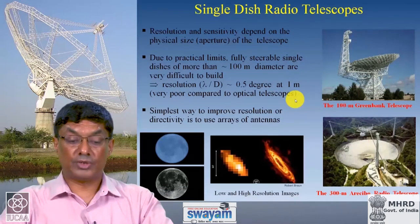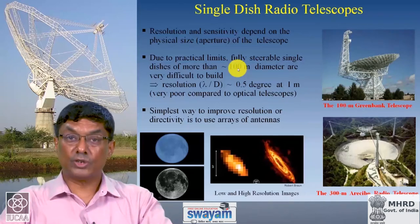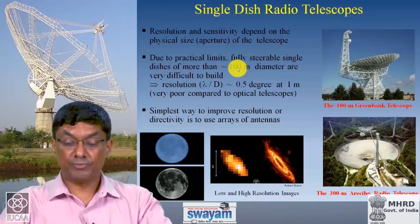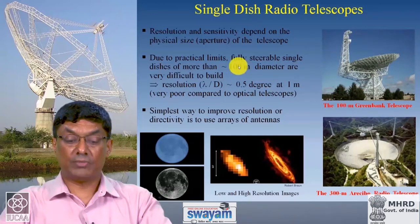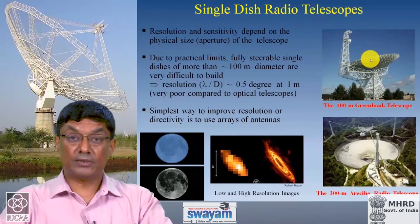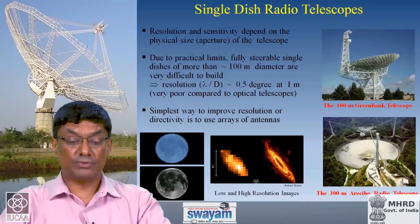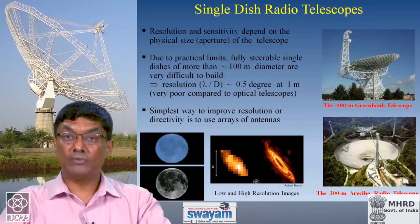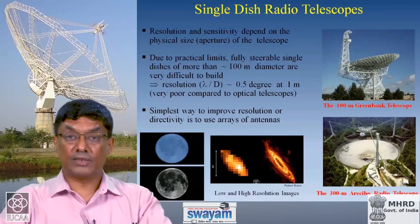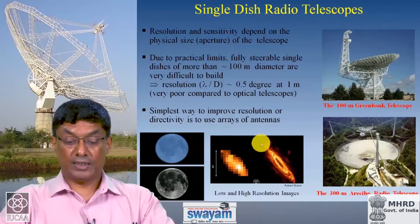There are practical limits to how large a radio antenna you can build and still have it fully steerable. Some of the largest fully steerable antennas today are of the order of 100 meters in diameter — an example is the 100-meter Green Bank Radio Telescope in the US. But if you ask what resolution a 100-meter radio telescope would provide, it is only half a degree at 1 meter wavelength, which is 300 MHz frequency. Half a degree is very poor resolution compared to even the simplest optical telescope, simply because the wavelength at optical is much much smaller than at radio.